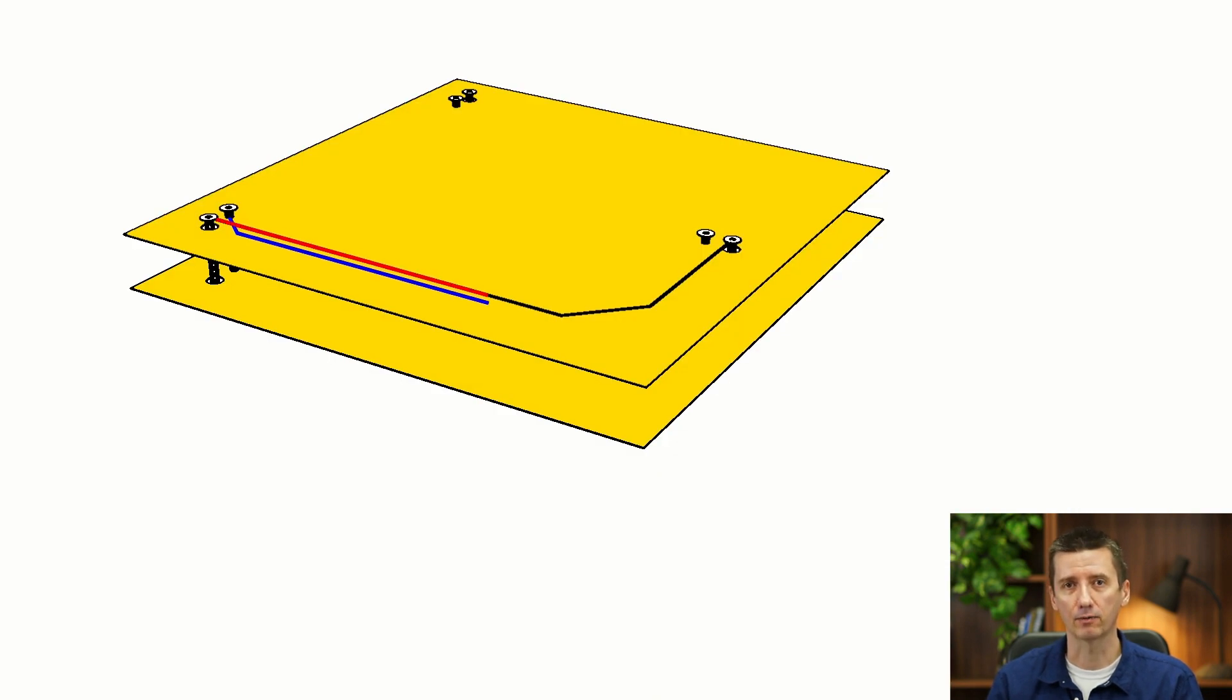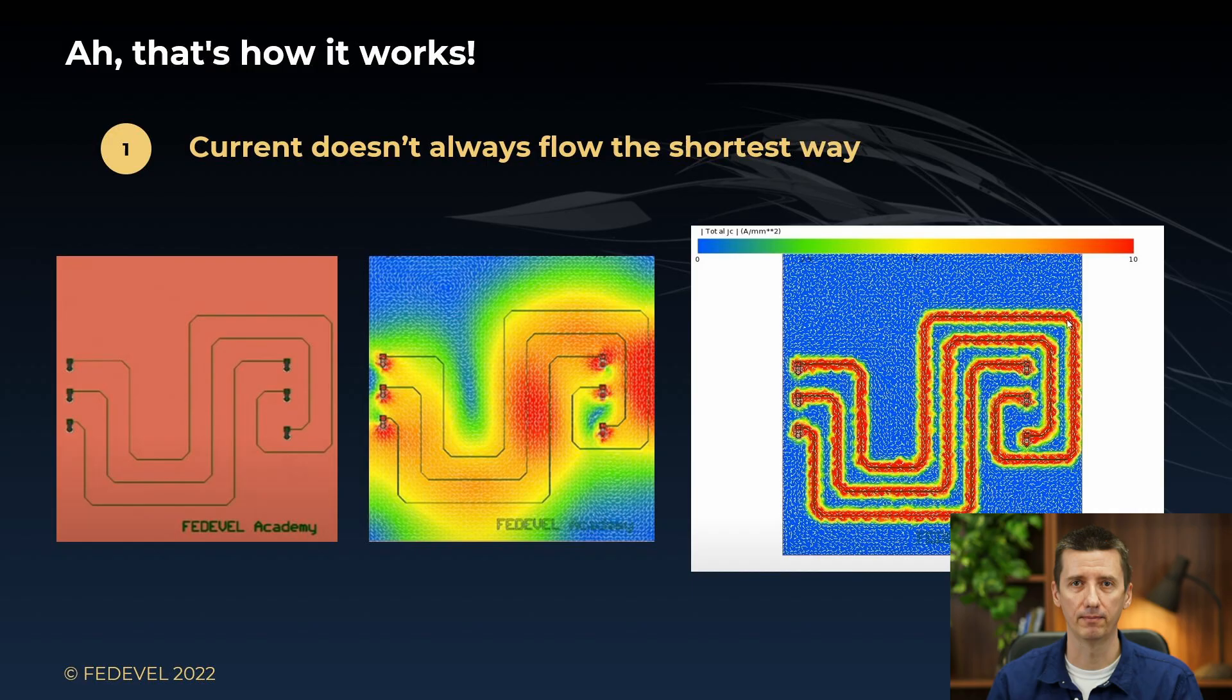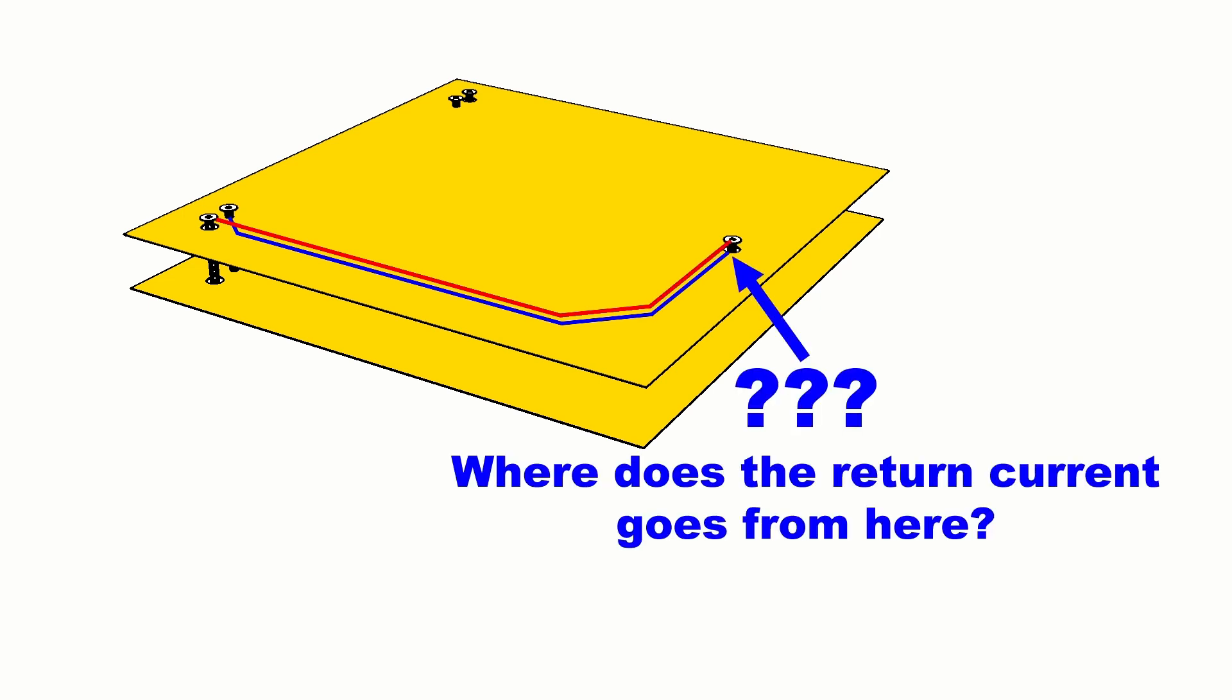In this animation, a signal is routed from layer 1 to layer 4 and we are using a ground via, or it's also called a stitching via, to make it easier for the return current to flow together with the signal. And because we are aware of the return current, now we can be like, oh, wait. What will happen if there is no stitching via?